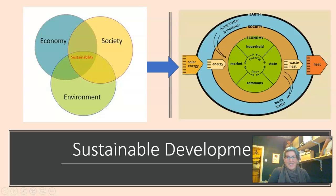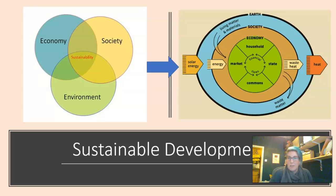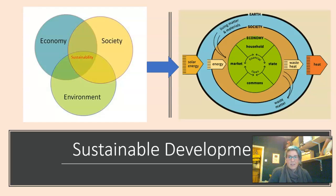Here are two diagrams that you may be familiar with, certainly a concept you're familiar with particularly from the development and sustainability module last year. So when we think about sustainable development historically, we used to think about it as being a balance between these three elements: the environment, the economy and the society, and at the overlapping point of these three equally balanced spheres was this concept of sustainability.